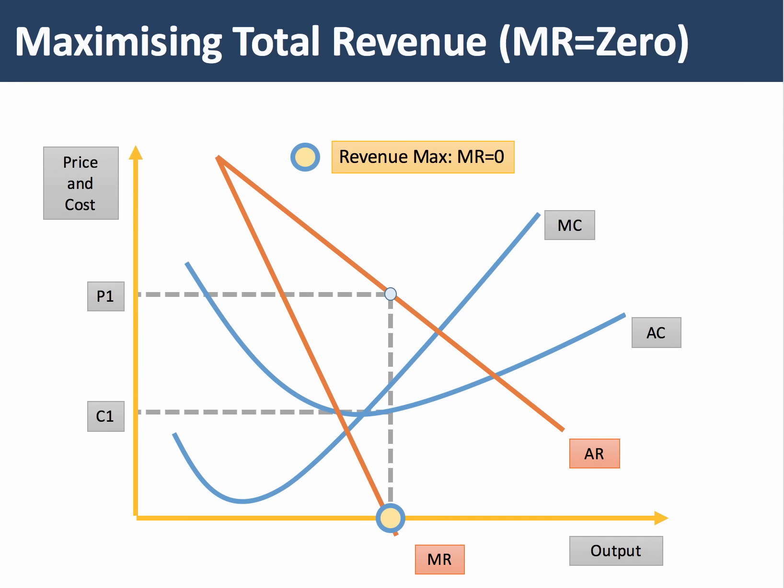A business maximizes revenue when marginal revenue is zero. This will normally be a higher output than the profit-maximizing level. Again, you find where MR is zero, draw up to the demand curve to find price P1, and find the cost curve to show the level of profit. Revenue maximization represents a departure from profit maximization and is an alternative business objective.